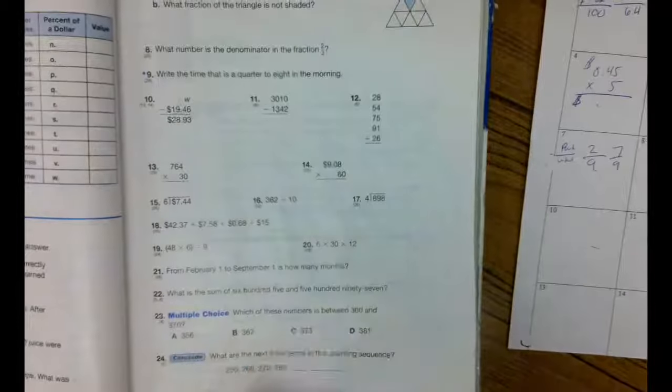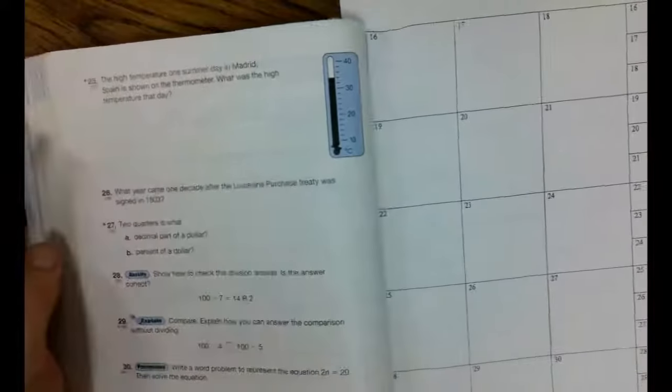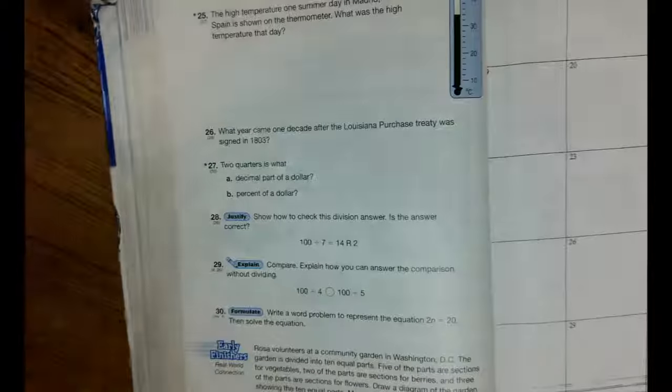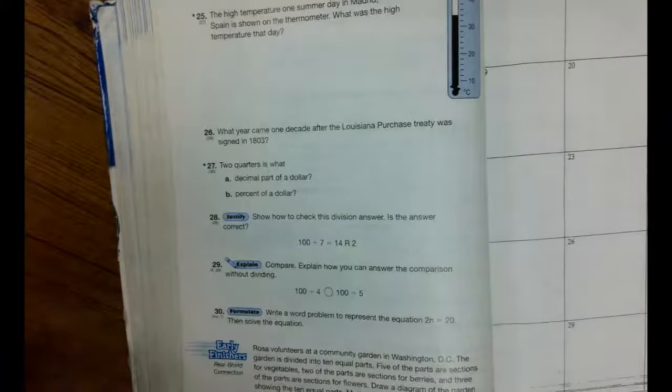All right, guys. Why don't you turn the page? Let's take a look at a couple at the end. Number 25. It says the high temperature one summer day in Madrid, Spain, is shown on the thermometer. What was the high temperature? So we've got to look at the temperature.